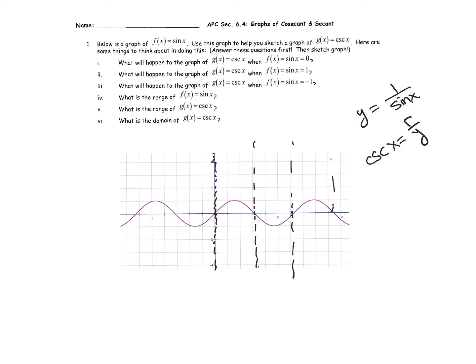Let's think about other crucial parts of this graph. At pi over two, sine of pi over two is one, and the reciprocal of one is one. You may know that sine of pi over six is one half, and the reciprocal of that will be two. As we get tinier values, the reciprocal will be quite big. So we're going to have a graph looking like this.